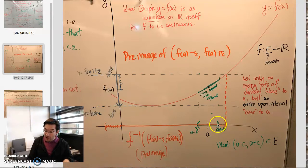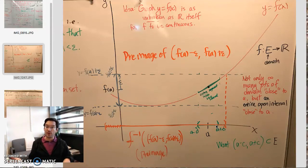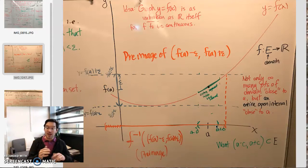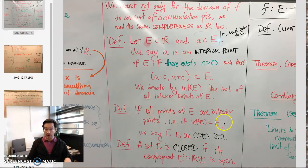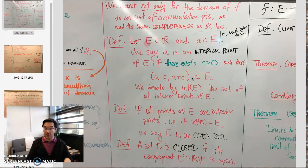Around A, we can find an entire open interval — even if that open interval has to be very, very small — all of whose points are contained inside E. So E not only contains infinitely many points close to A, but it contains an entire open interval centered at A which is entirely within E. That was our definition for interior point. An open set is then exactly a set all of whose points are interior points.